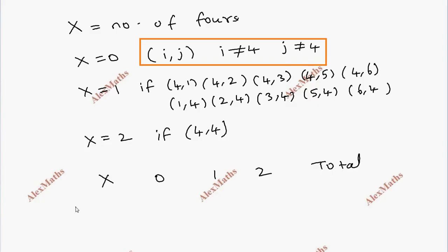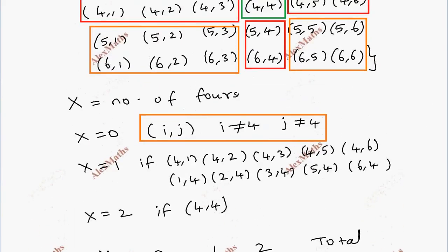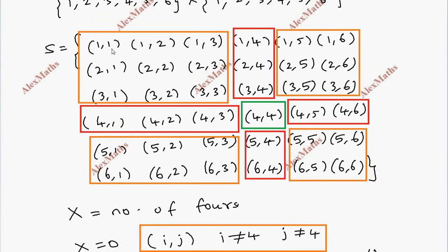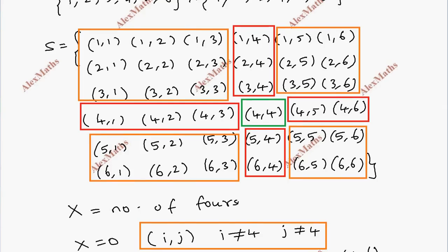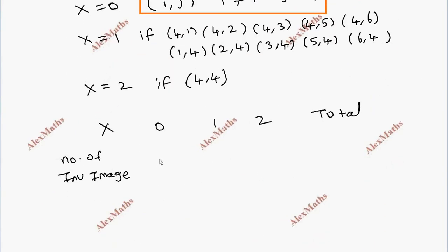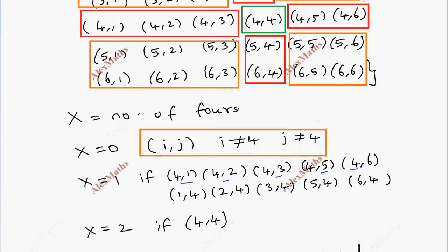Looking at the total number of outcomes: there are 25 elements where x equals 0 (no 4s), 10 elements where x equals 1 (one 4), and 1 element where x equals 2 (two 4s), giving a total of 36 outcomes.